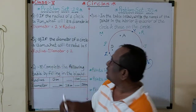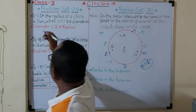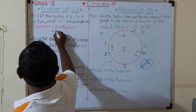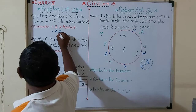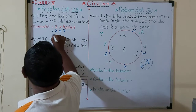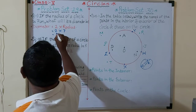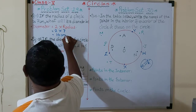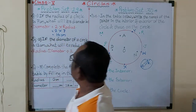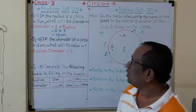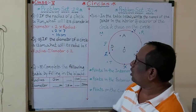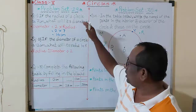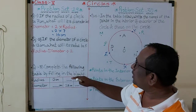So here, diameter is what we have to find. Two multiplied by radius — radius is given as 7 centimeters. So 2 × 7 = 14 centimeters. This is how you solve it — always write the formula first.